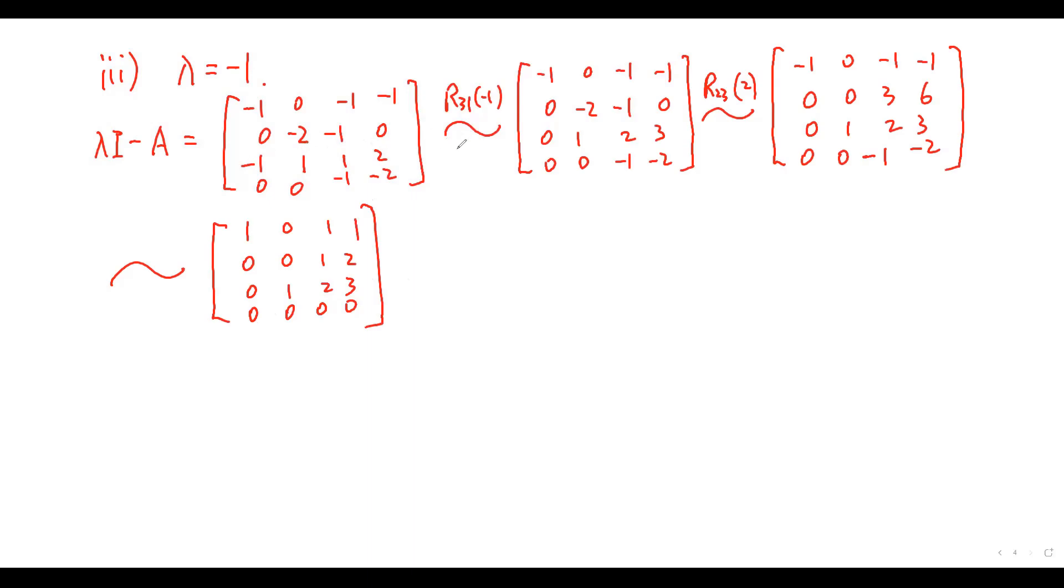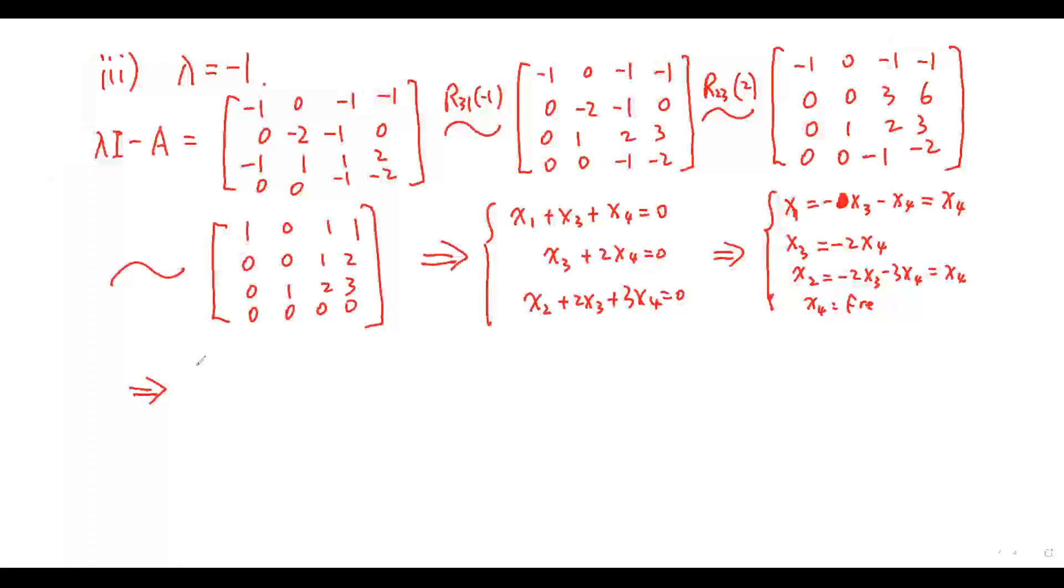For the eigenvalue equals minus one, this matrix equals, by row operations, we can get this matrix. From this matrix, we get the equations. So, we get the eigenvector equals that.